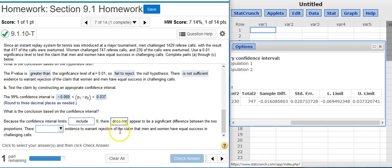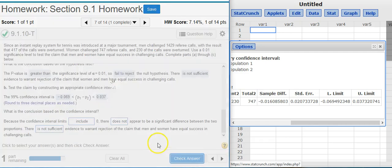And therefore, if we're going to ask about rejecting the claim that men and women have equal success, well there's not sufficient evidence to warrant rejection of that claim because we actually have evidence that suggests they could be the same. Check my answer. Well done.